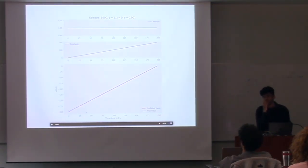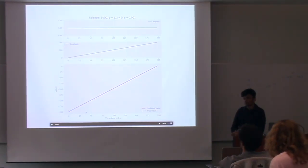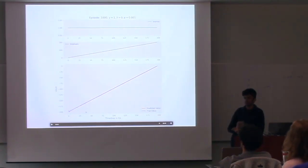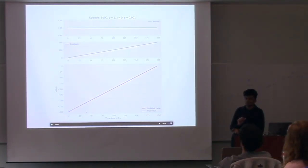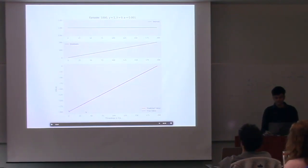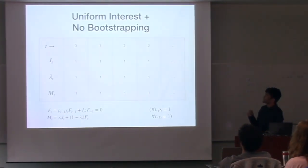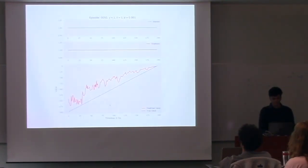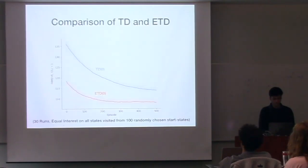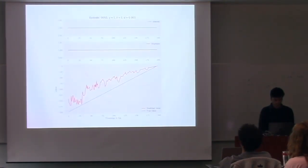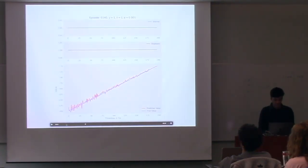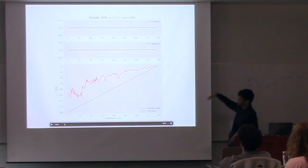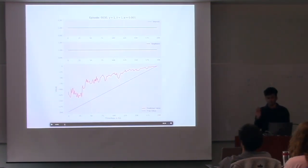Audience: Is the x-axis the time step? Speaker: Yes, it's the time step. This is a deterministic policy from the same start state, so I'm just running one episode essentially, multiple times. Finally, uniform interest without bootstrapping - here too we get emphasis as one. But the behavior is kind of different. If you think about the behavior of Monte Carlo, which has high variance, then you might see something like this, where all state values essentially decrease sort of independently, because there's no bootstrapping involved. This is the Monte Carlo behavior of the algorithm.